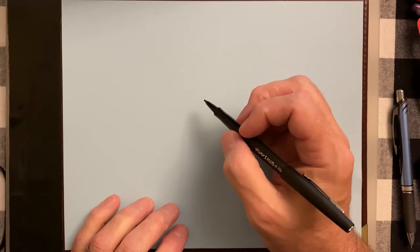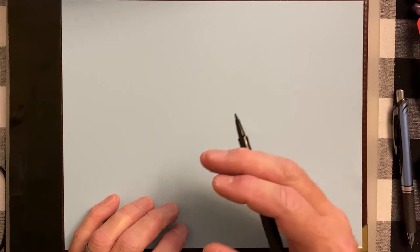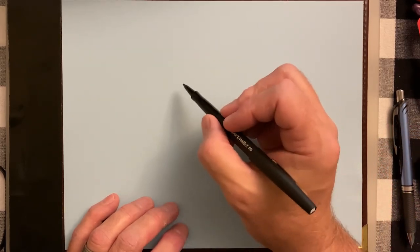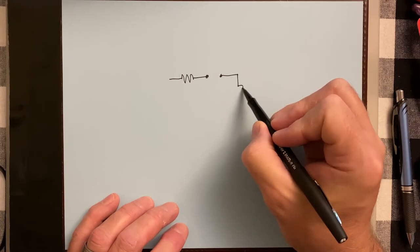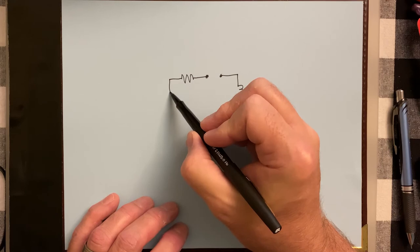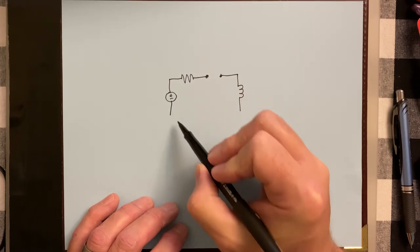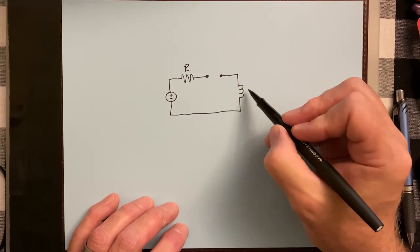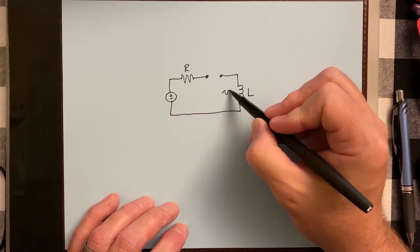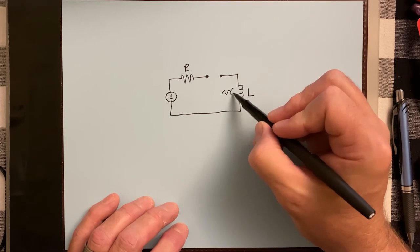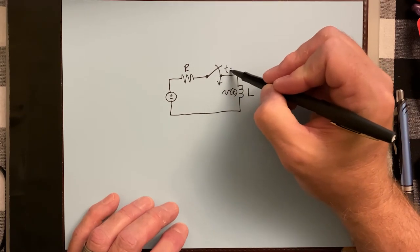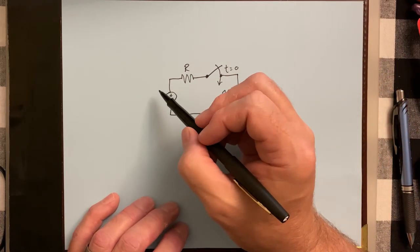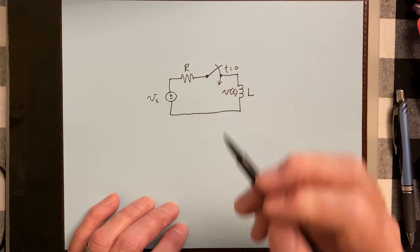We're going to start with the RL circuit. Remember what the step response is — the step response is where energy is being added to the magnetic field, so energy buildup. But after a long period of time, the inductor behaves just like a piece of wire. So let's say our circuit looks like this: here's the resistor, here's the inductor, there is some voltage across the inductor that's going to be a function of time. The switch is initially open, but it is closed at T equals zero, and this is our voltage source with voltage V sub S.